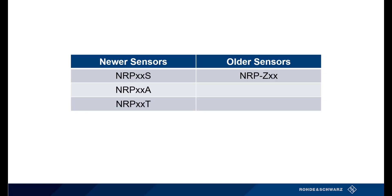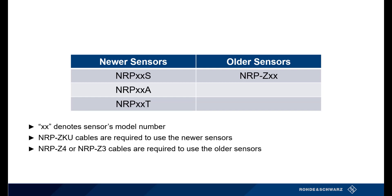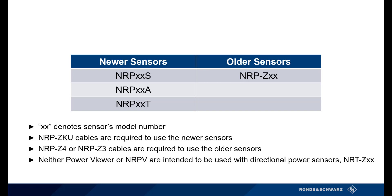Before we move forward, let's discuss the sensors that fall into the newer and older series. The table on the screen shows the variety of sensors that are in each category. The double X's distinguish the model numbers of the sensor. You must purchase USB cables to properly interface with both the newer and older sensors. The newer sensors require NRPZ-KU cables, while the older sensors can be used with either the NRPZ4 or NRPZ3 cables.